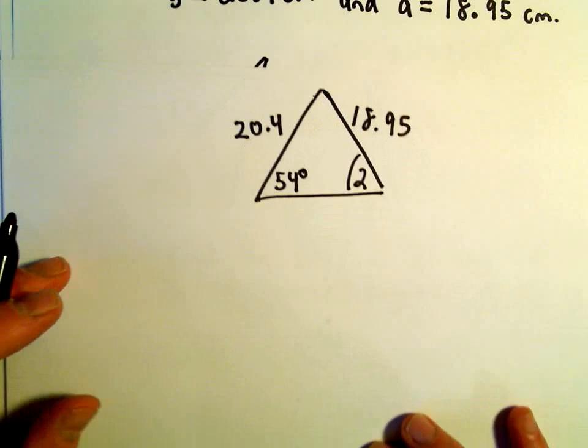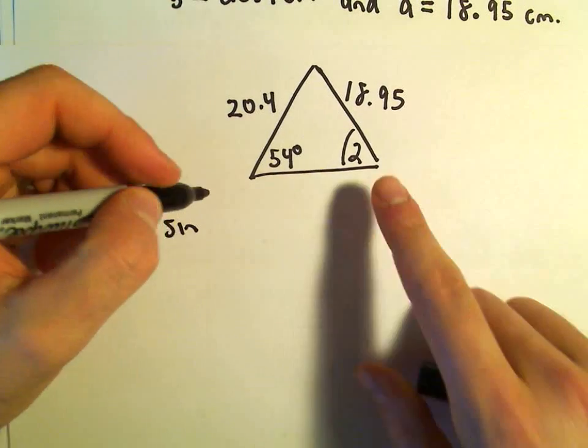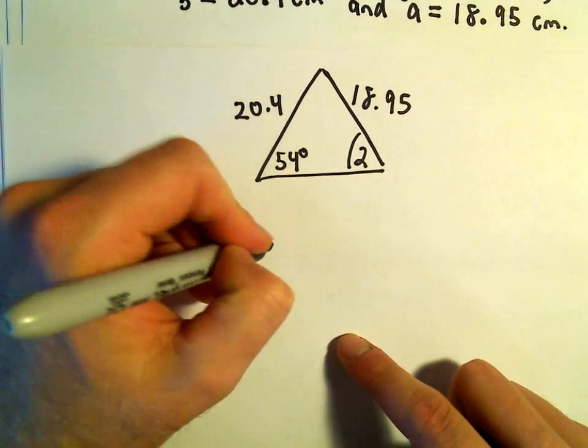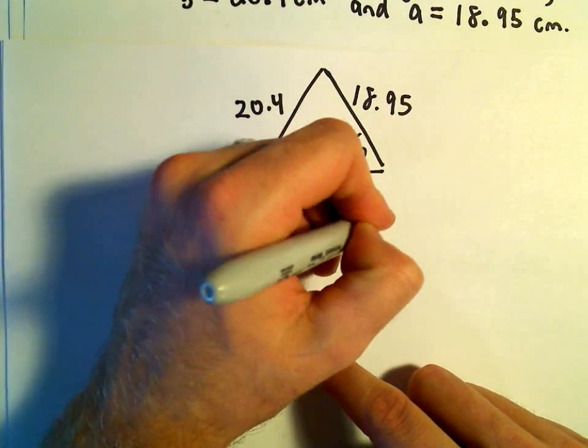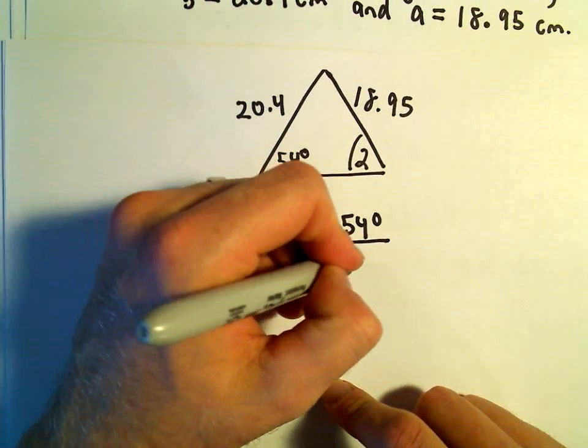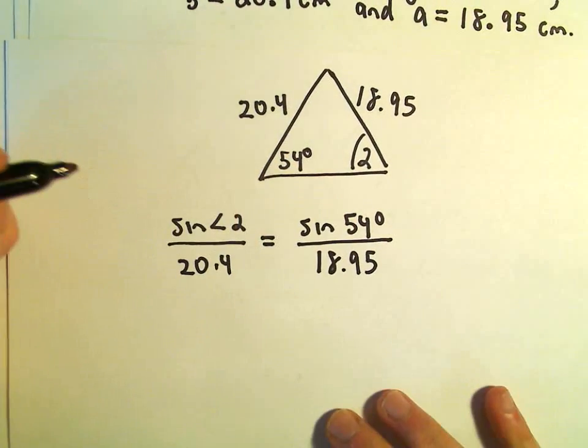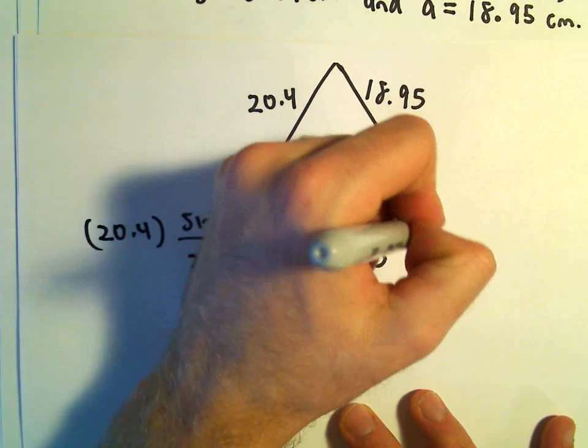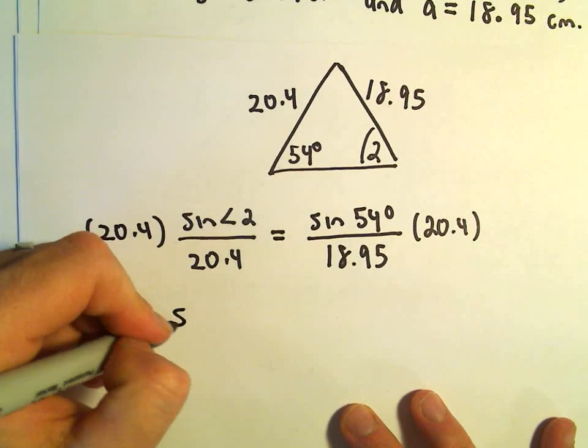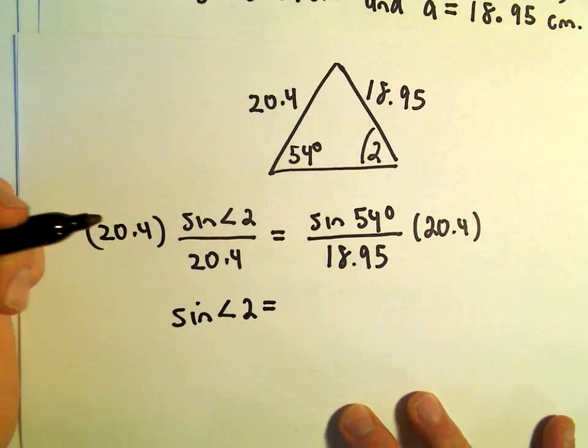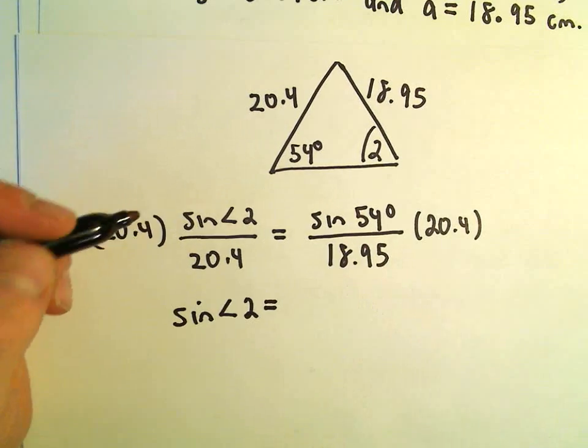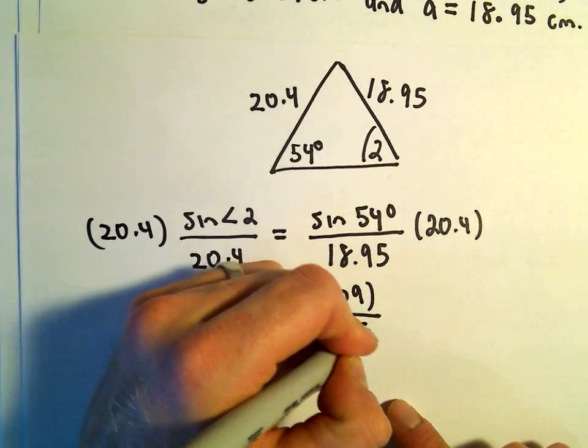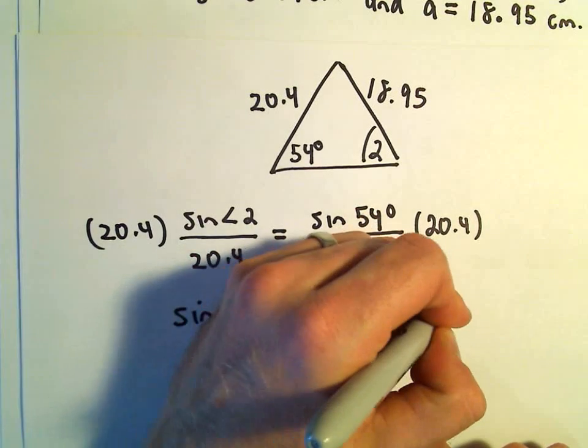That's what we're going to determine here. So we could say the sine of angle 2 over 20.4 that would equal the sine of 54 degrees over 18.95. So I'm going to multiply both sides by 20.4.